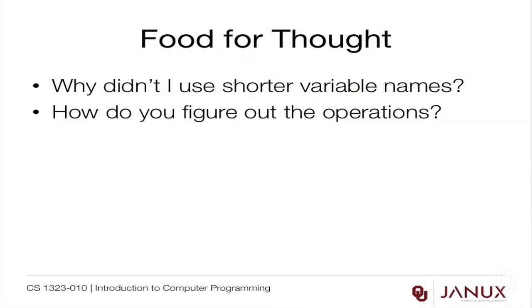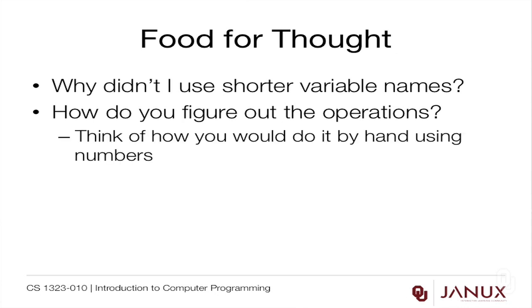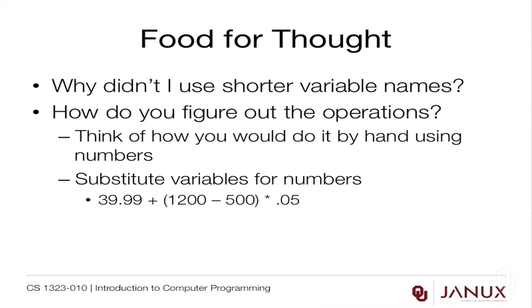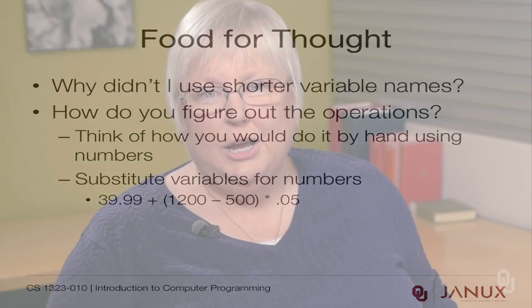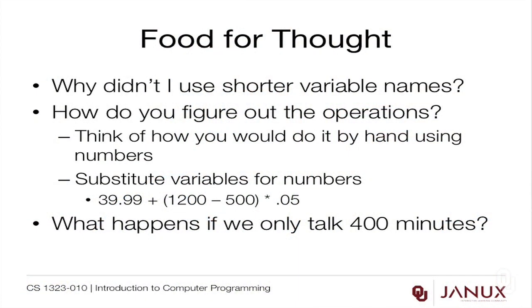You might also wonder how I figured out the operations. The easiest way is to think about how you would do the calculation by hand using numbers, and then substitute in the variables. For example, if you knew the calculation was 3999 + (1200 - 500) * 5, you could just identify what we called those numbers and substitute them in.